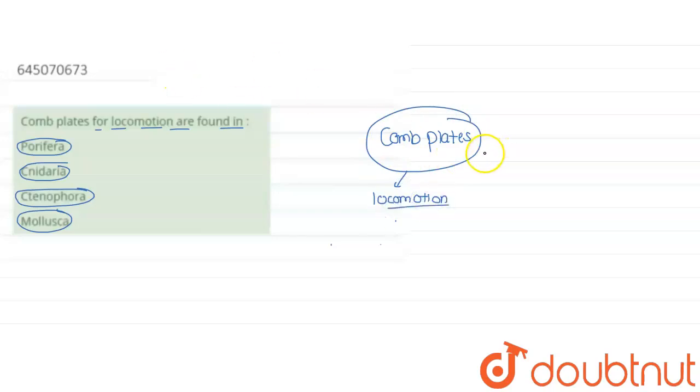Now, if these particular plates are used for locomotion, they are a particular characteristic of Ctenophora. They are the particular characteristic of Ctenophora where these comb plates help in the movement.